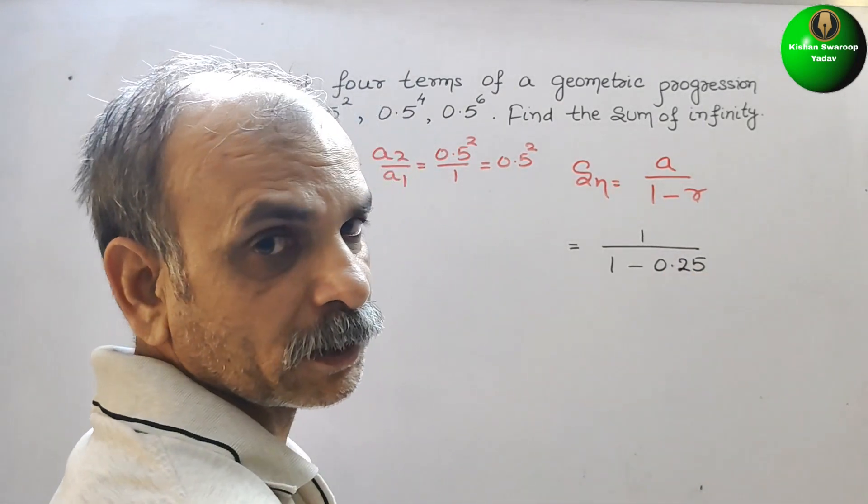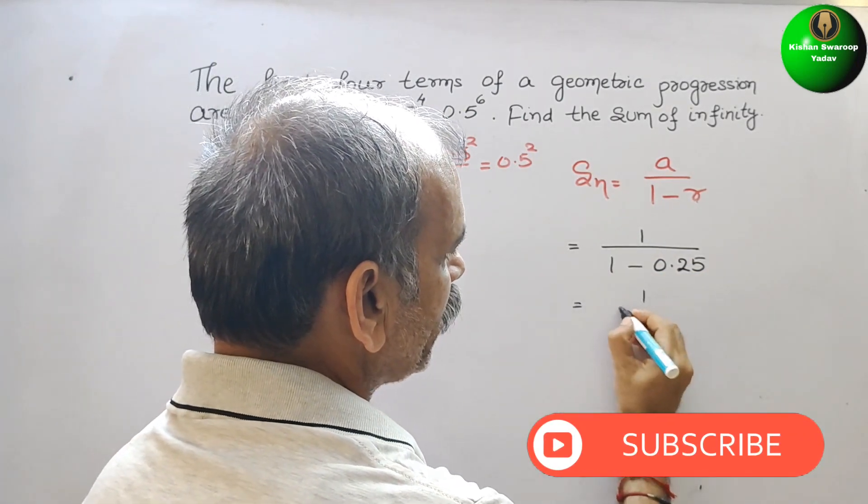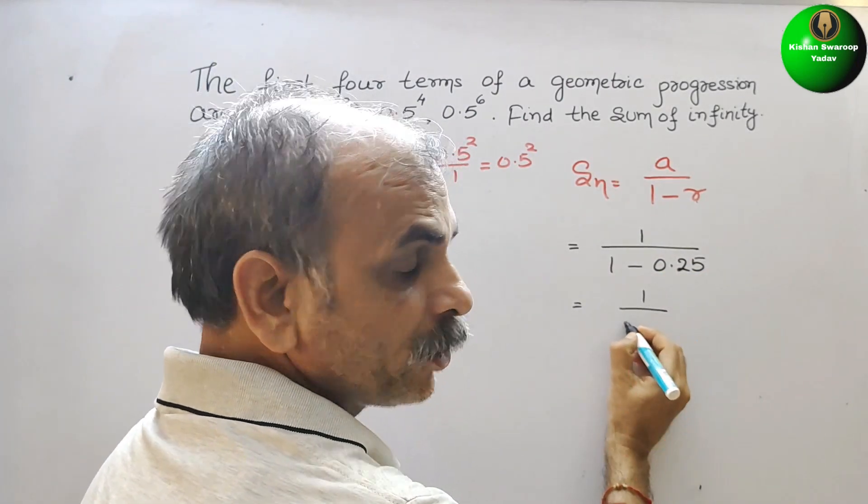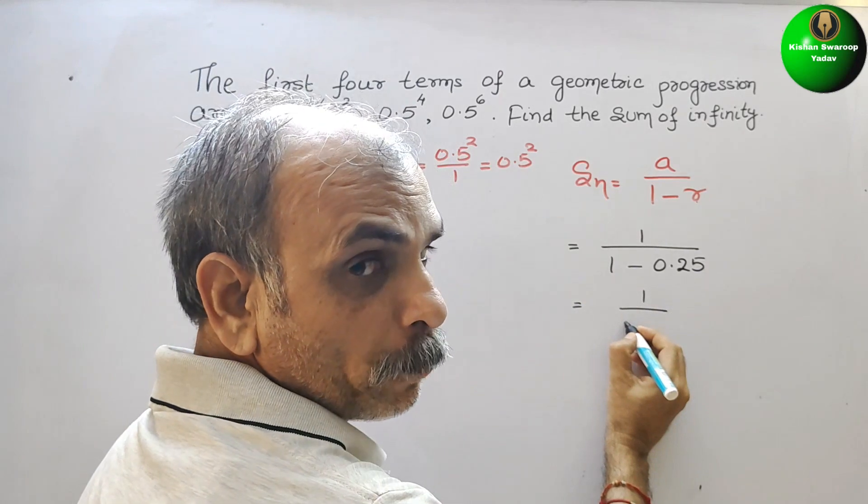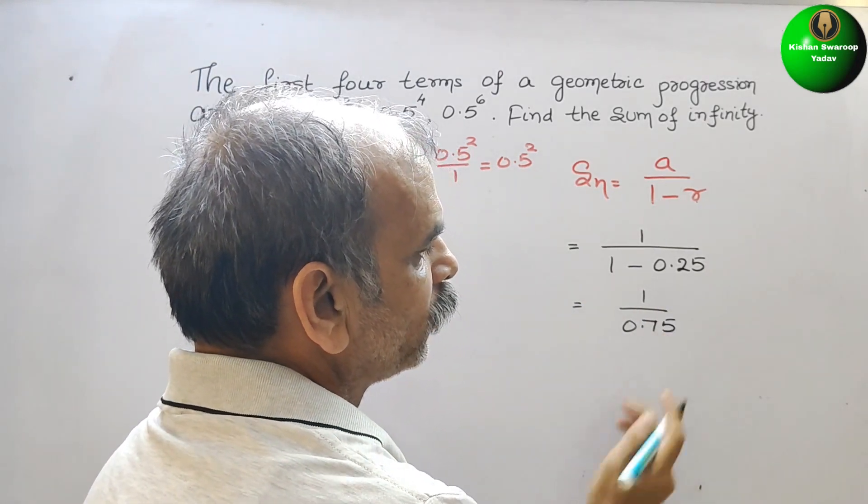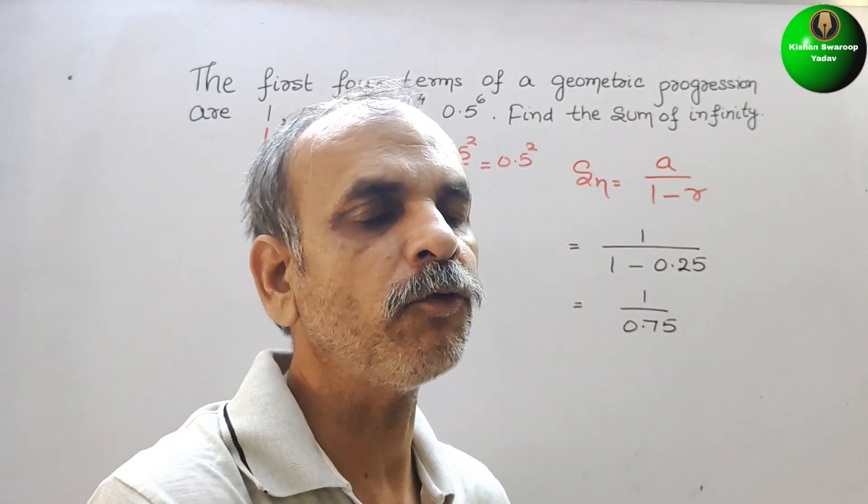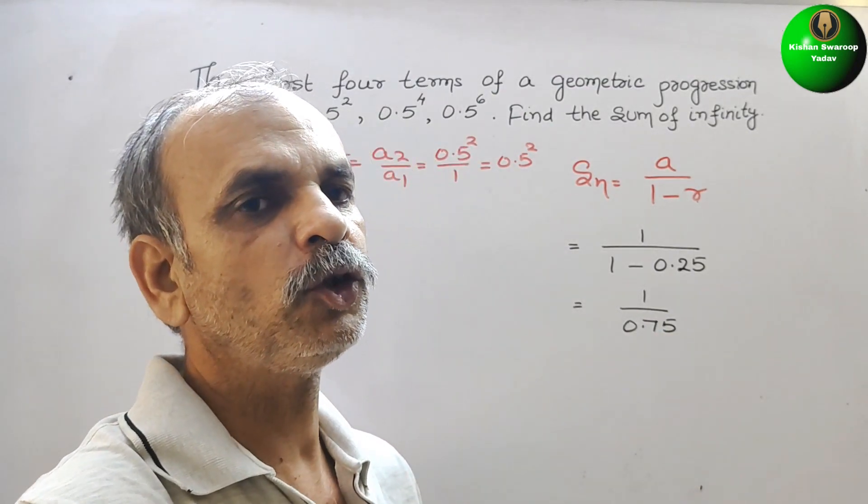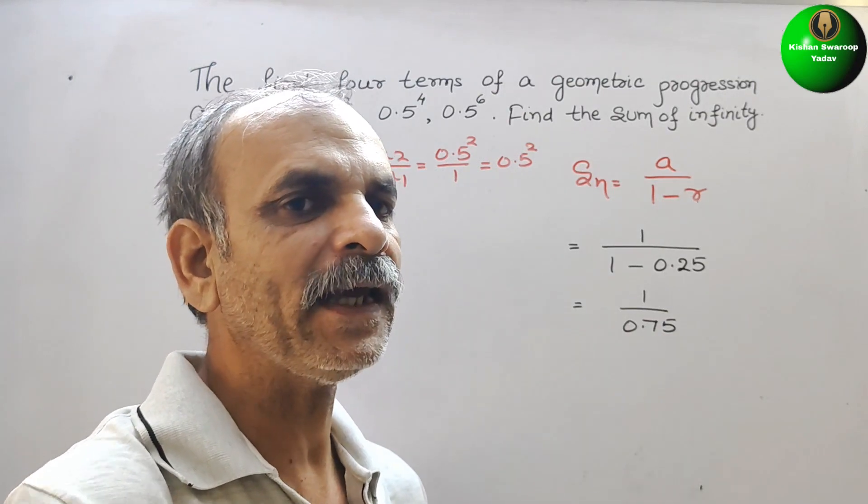Just solve this. Here you will get 1 by how much? 1 minus 0.25 is 0.75. We know that 0.75, we used to write as 75 by 100.